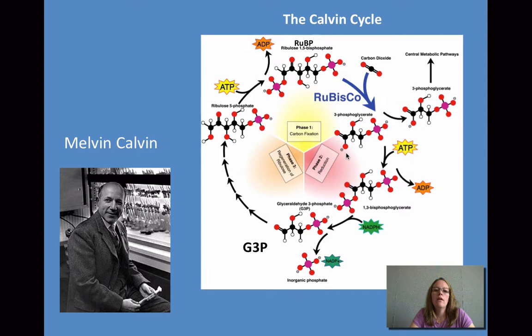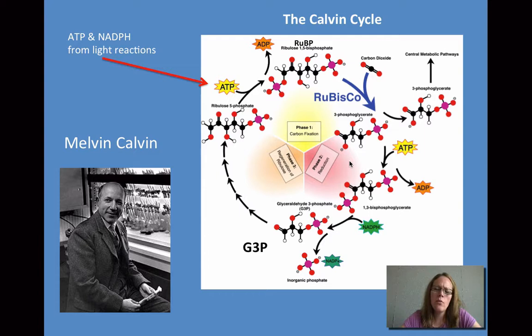So where do those products go? Well, the ATP and the NADPH from the light reactions are in the stroma, and then they enter what we call the Calvin cycle. This was a pathway that was described by Melvin Calvin. And what he found was that we start with RUBP.